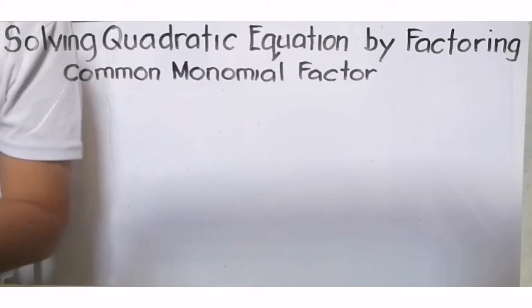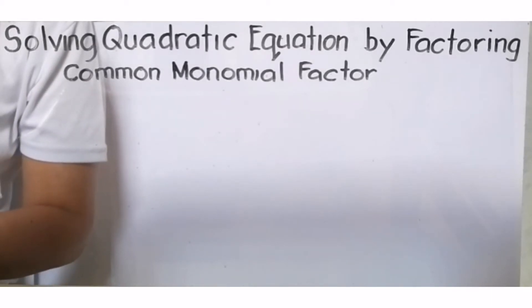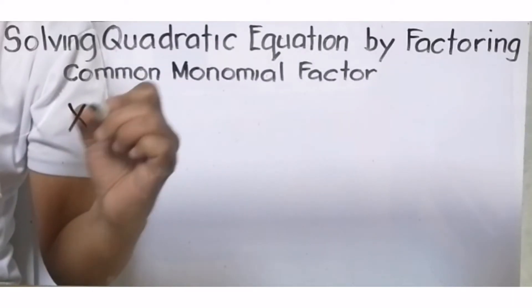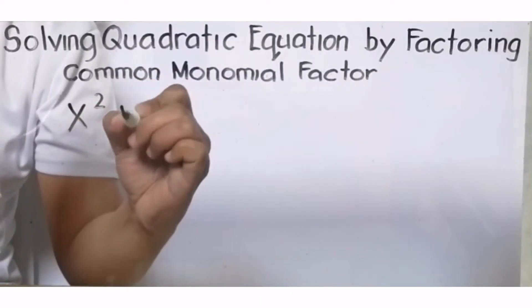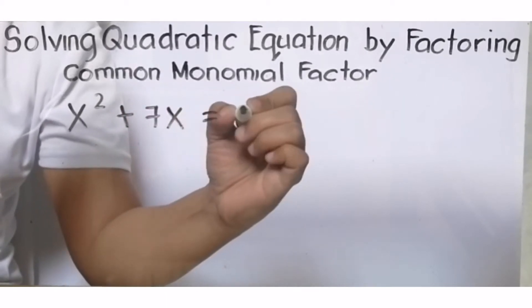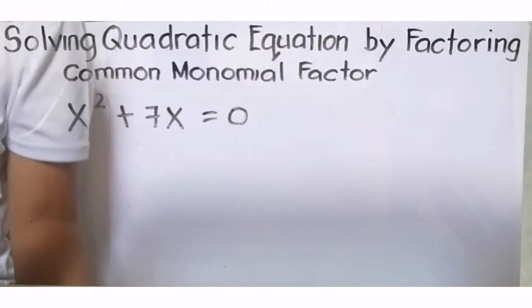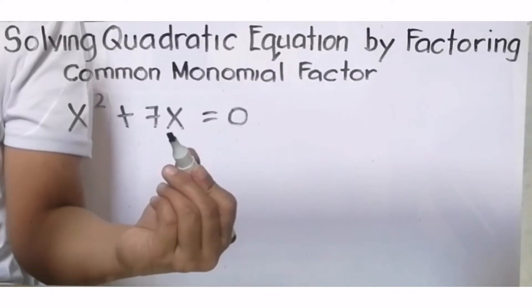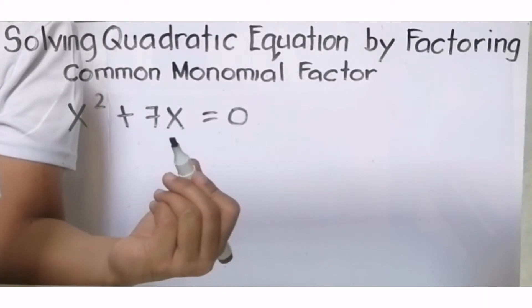Our topic for this day: Solving Quadratic Equation by Factoring Common Monomial Factor. For example, meron tayong x² + 7x = 0. Ang unang step natin dito, i-factor out natin yung common to both x² and 7x na factor.